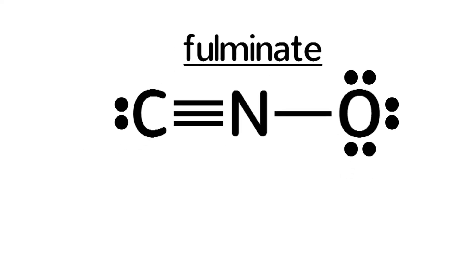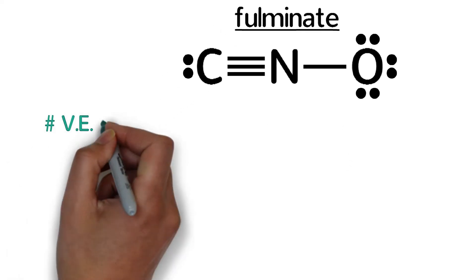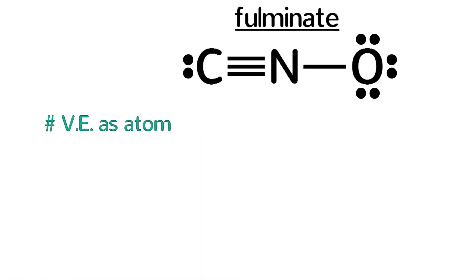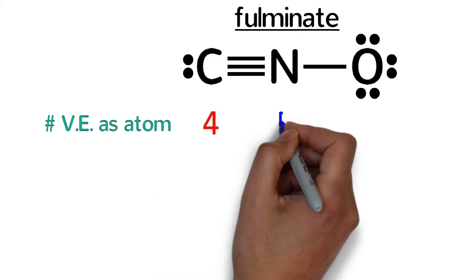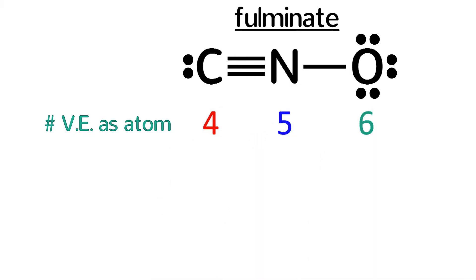Okay, now let's see if you got them all correct. First, how many valence electrons do they have as atoms? Carbon has four, nitrogen has five, and oxygen has six.